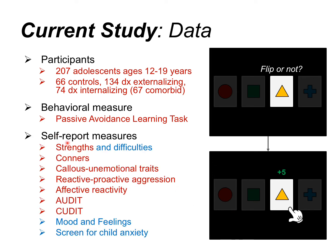To look at traits — trait impulsivity and anxiety — we have data from a variety of self-reports. Those in red are a priori associated with trait impulsivity; blue ones with trait anxiety or internalizing. Some questionnaires overlap, but together they cover ADHD, callous unemotionality, aggression, irritability, alcohol use, cannabis use, depression, and anxiety.